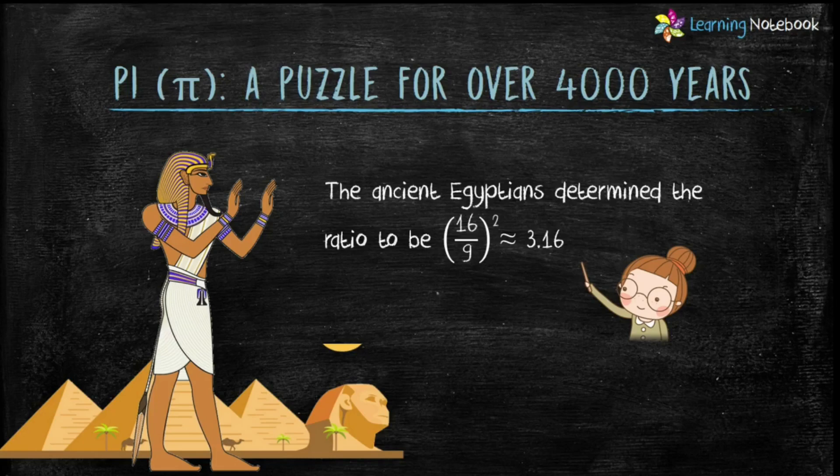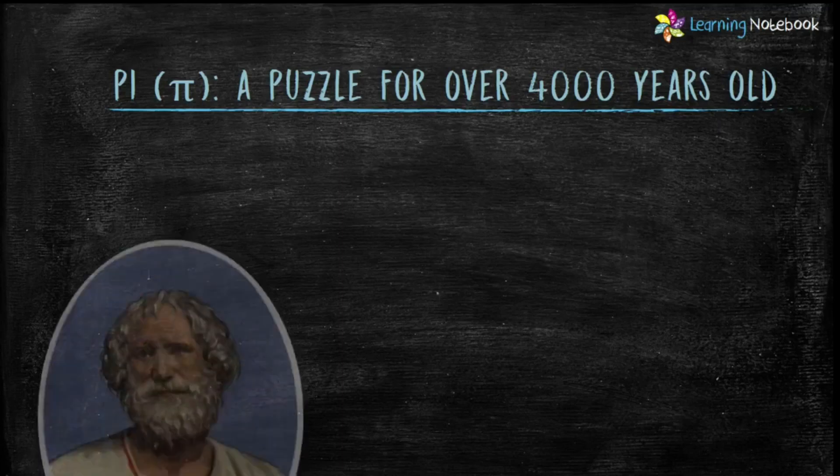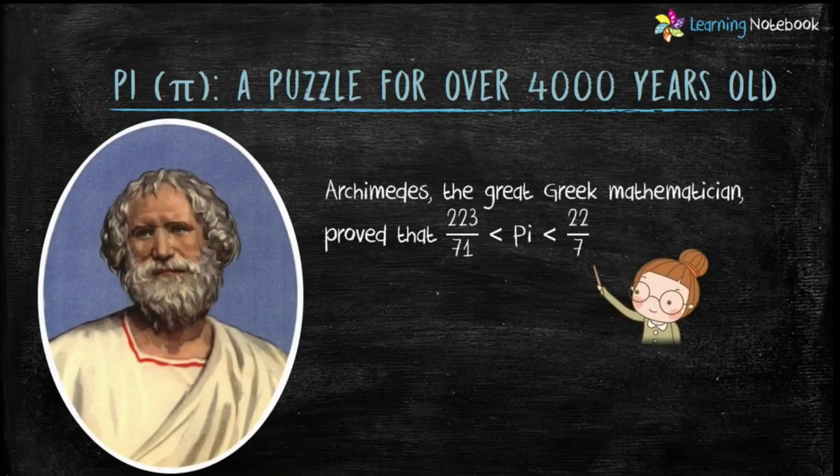It was Archimedes, the famous Greek mathematician, who calculated pi on the basis of measurement and he proved that the value of pi lies between 223/71 and 22/7.